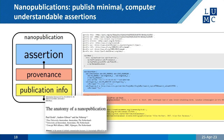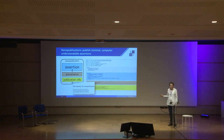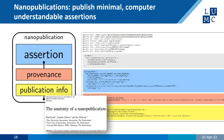Another idea that came out of that time was the nanopublication. Tobias Kuhn in Switzerland is now one of its main advocates. The idea is that you publish a really minimal assertion with some provenance and publication information — a tiny publication that is completely computer-understandable. It still exists and we still use it sometimes; nanopub.net is the resource.